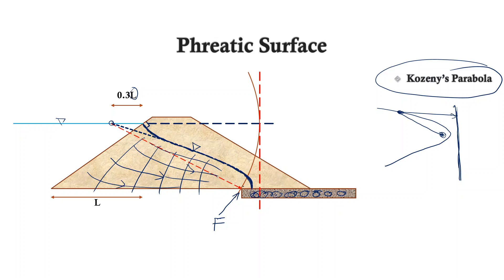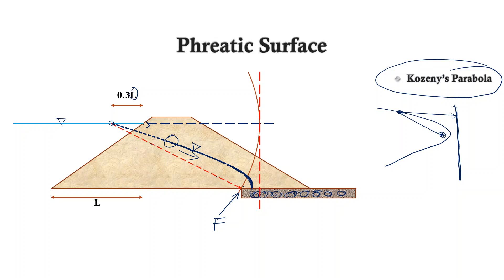Let us understand why the seepage line is perpendicular to the upstream surface. It is because it is a stream line — flow is taking place in that direction. When flow takes place along a stream line, the stream line must be perpendicular to an equipotential line. So an equipotential line will be perpendicular to this stream line. In this case, the upstream slope of the dam itself is an equipotential line.